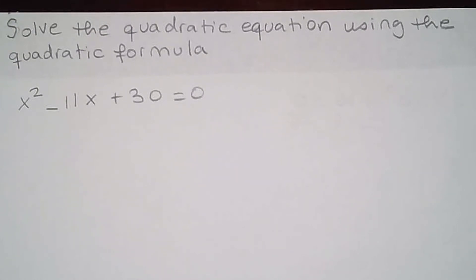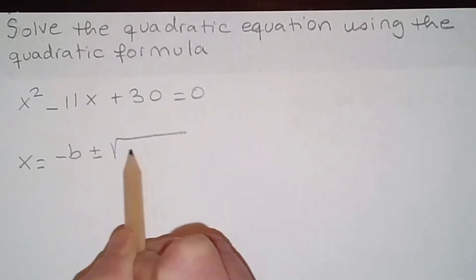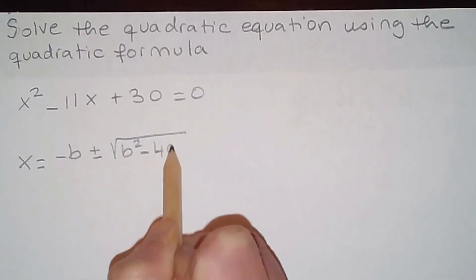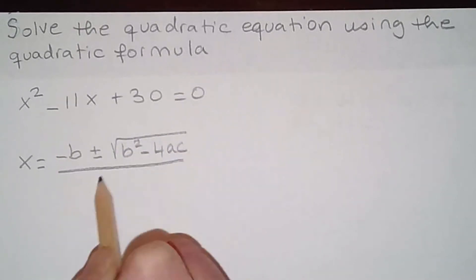I want to remind you of the quadratic formula. So x is equal to negative b plus or minus square root of b squared minus 4ac over 2a.